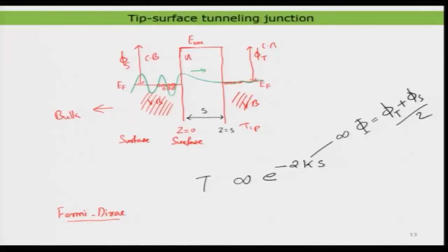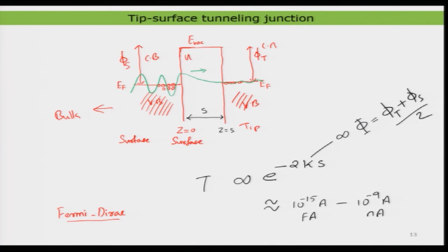If you increase the distance to more than about 10 nanometers, the tunneling probability becomes extremely small and we cannot detect the tunneling current. A typical tunneling current is on the order of 10 to the minus 15 ampere up to about 10 to the minus 9 ampere — femtoampere to nanoampere. The femtoampere is very difficult to measure, but under very stable conditions using modern electronics it is possible. Normally the workable range is picoampere to nanoampere. The strong distance dependence is a very important consideration.